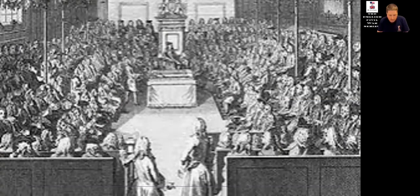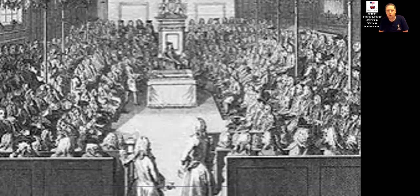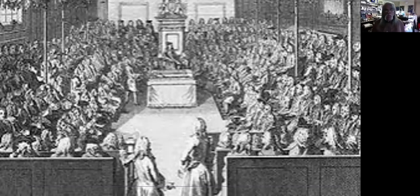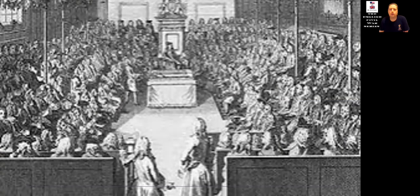From 1629 to 1640, Charles ruled without a Parliament — called the personal rule of Charles I, or the 11-year tyranny. All groups that didn't like the way the country was being run came together to form a single party, mainly under Puritan control. Puritans literally means the pure word of God — they took very simple, basic ideas and concepts, and as far as they were concerned, anything outside of that was subservient.